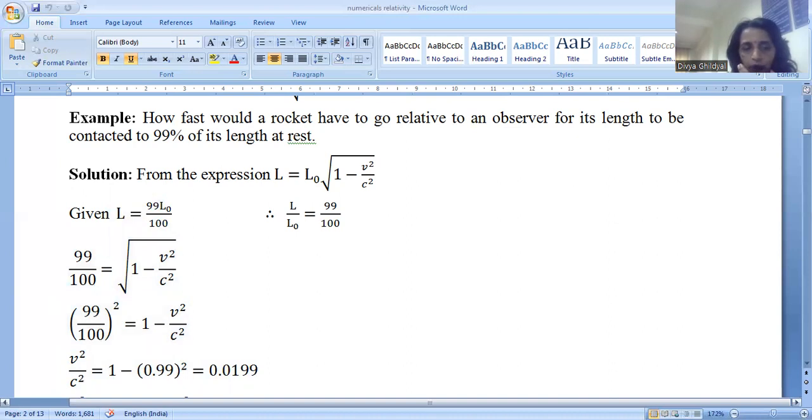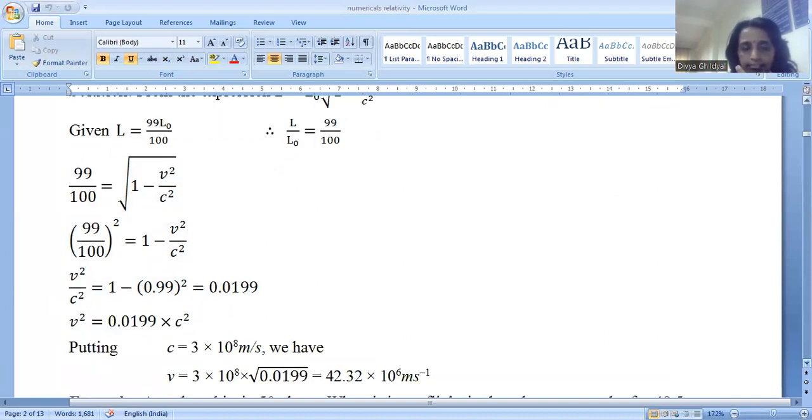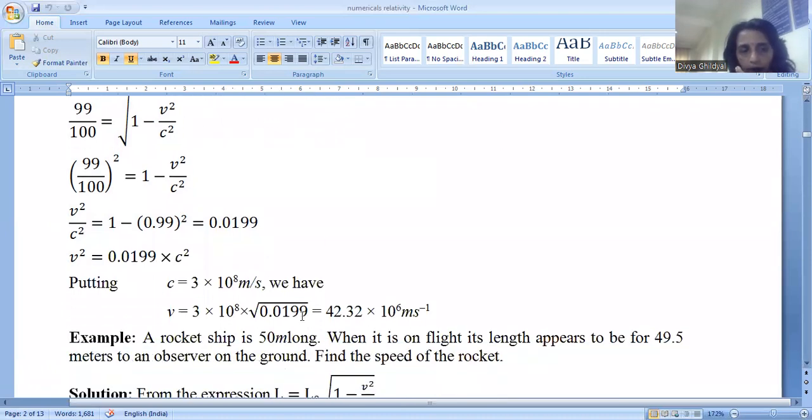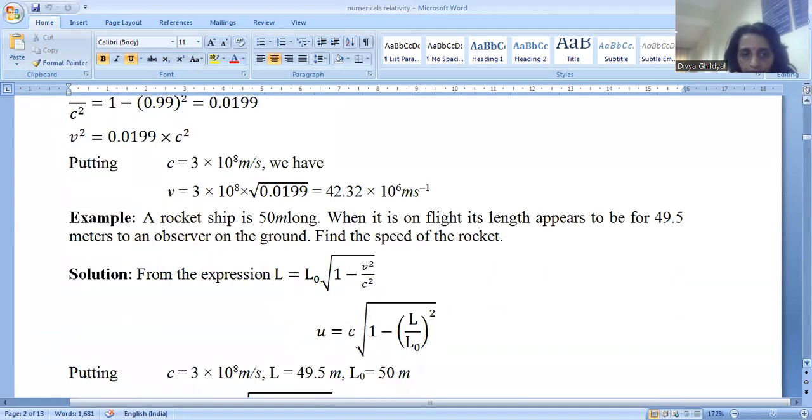So this becomes equal to 99 upon 100 square is equal to 1 minus v square by c square. Now I cross multiply: v square is equal to 0.0199 into c square, where c is velocity of light which is equal to 3 into 10 to the power of 8 meter per second. Putting this value, I get my value of v.